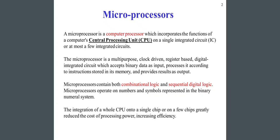The main working principle of microprocessors: accept binary data as input, process the data according to instructions in memory, and provide the result as output. Microprocessors contain both combinational logic and sequential digital logic, and operate on numbers and symbols represented in the binary numeral system. Integrating a whole CPU onto a single chip greatly reduced the cost of processing power and increased efficiency.